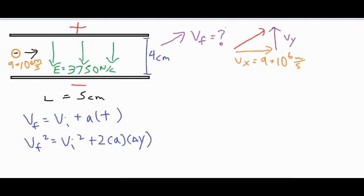The initial velocity in the y direction is zero because the electron doesn't have any vertical velocity to start off with. For the first kinematic formula I need an acceleration and a time; for the second one I need acceleration and delta y. Either way I'm going to need the acceleration.